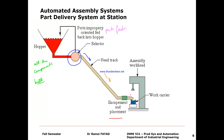The escapement device uses the cycle time of the assembly work head to synchronize component delivery. In this way, the escapement device ensures everything is ready and fed into the system for the assembly work head.